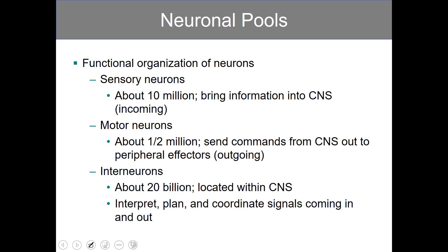If you consider all the neurons and the types of neurons within our body, we have about 10 million sensory neurons — neurons that are coming from sense organs or forming sense organs. We have half a million motor neurons, neurons that reach out and synapse at muscle, and 20 billion interneurons. Interneurons help to interpret, coordinate, and plan signals coming in and out of the central nervous system.